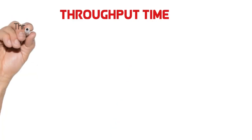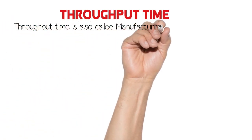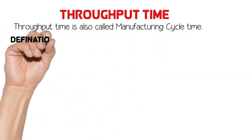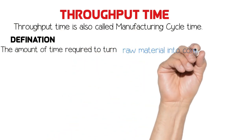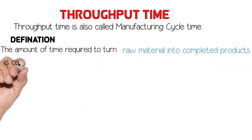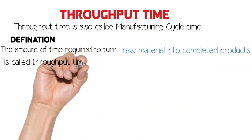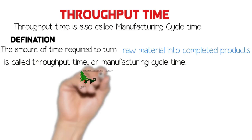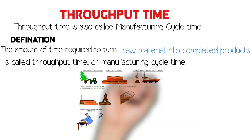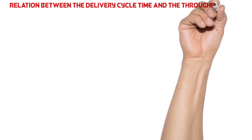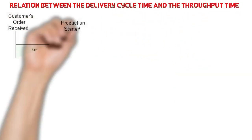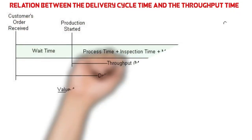Throughput time is also called manufacturing cycle time. The amount of time required to turn raw material into completed products is called throughput time or manufacturing cycle time. A question comes to mind: what is the relation between delivery cycle time and throughput time?